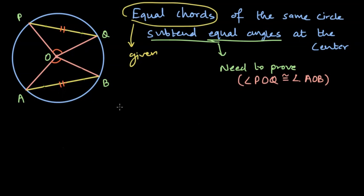Now to show the triangles congruent, we need at least three corresponding elements to be congruent. So let's consider two triangles: triangle POQ and triangle AOB. Let's note down what we observe about different corresponding elements.